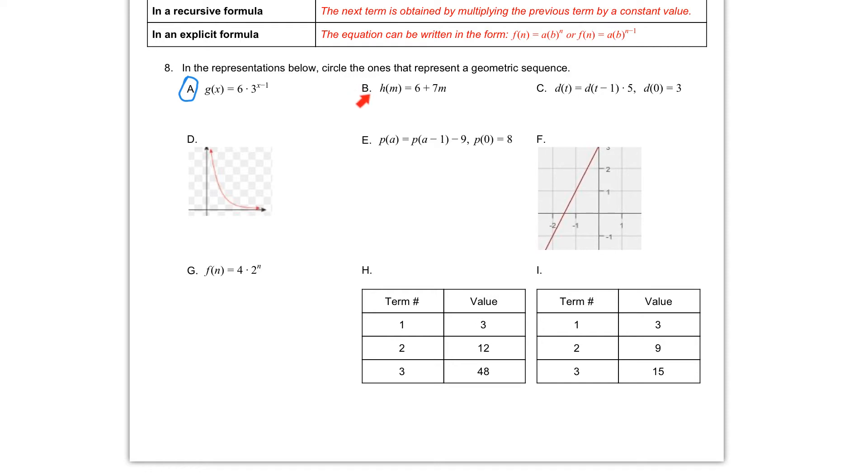If we take a look at letter B, we have h of m is equal to 6 plus 7m. This m attached to the 7 indicates that we are adding 7 each time. Adding 7 each time indicates an arithmetic sequence, so we will not circle letter B.